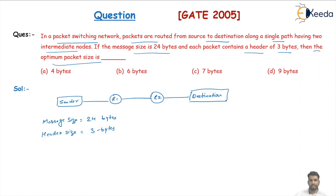The optimum packet size is the size of the packet that is maximum so that it will incur less overhead on the intermediate devices, and we can transfer the message with the least number of packets.